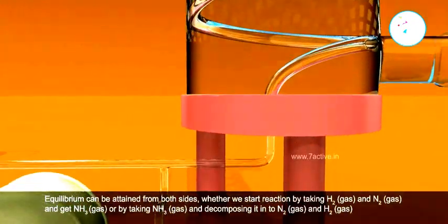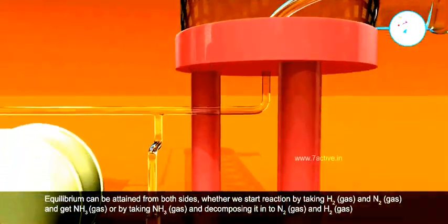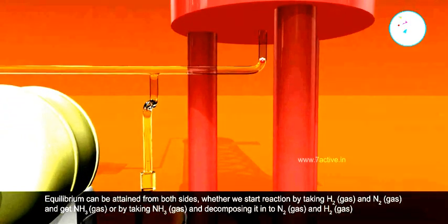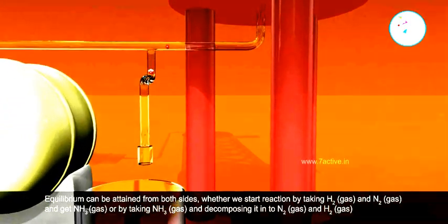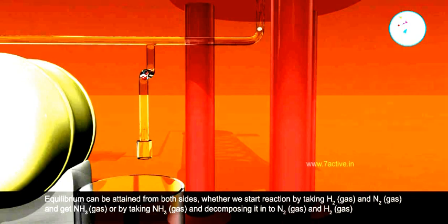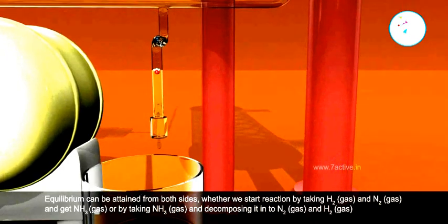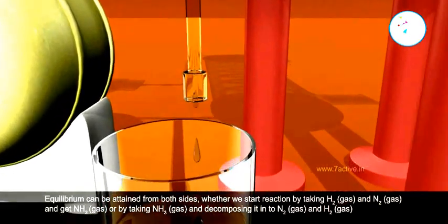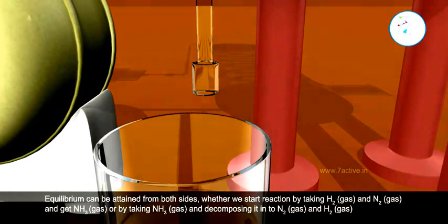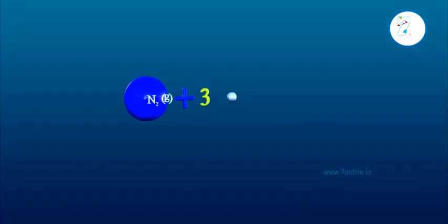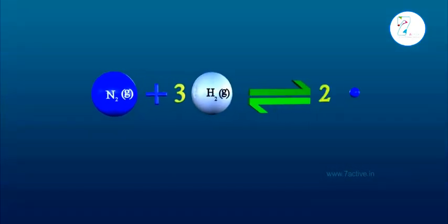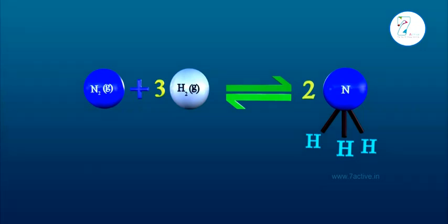Equilibrium can be attained from both sides: whether we start the reaction by taking H2 gas and N2 gas to get NH3 gas, or by taking NH3 gas and decomposing it into N2 gas and H2 gas. N2 gas plus 3H2 gas in equilibrium with 2NH3 gas.